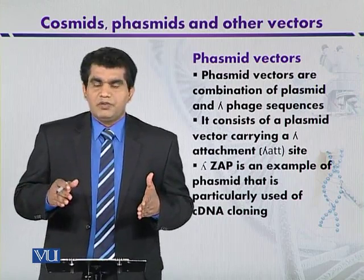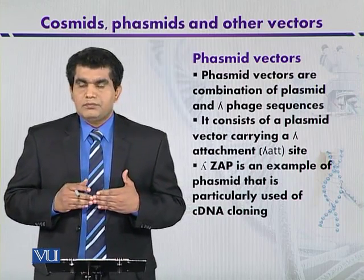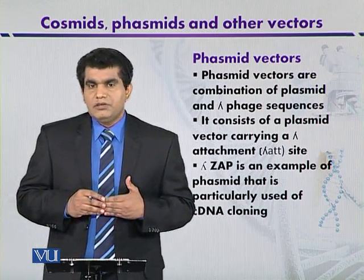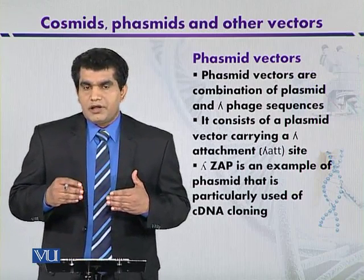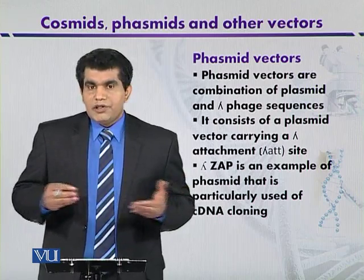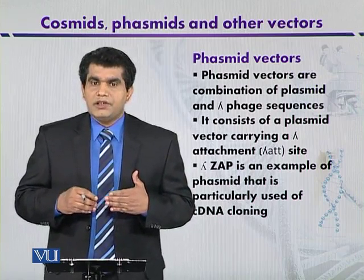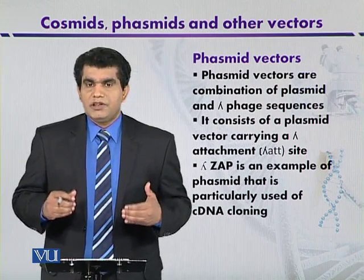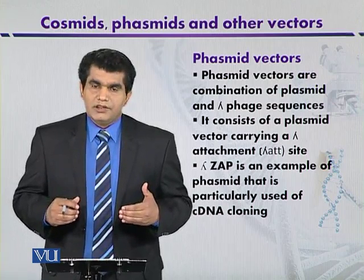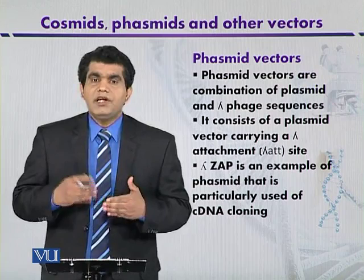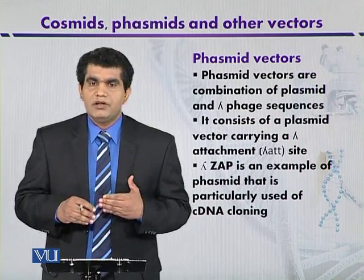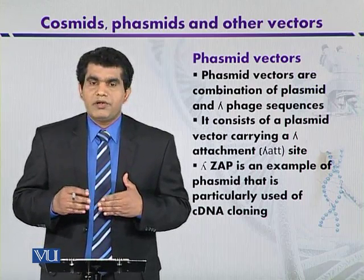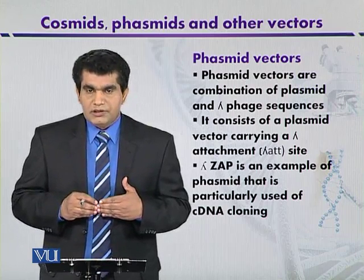With reference to selectable markers, lambda ZAP contains genes for the synthesis of beta-galactosidase. When foreign DNA is inserted within the gene that synthesizes beta-galactosidase, that gene is inactivated — this is called insertional inactivation. If there is no production of beta-galactosidase, it indicates that foreign DNA has been successfully inserted.